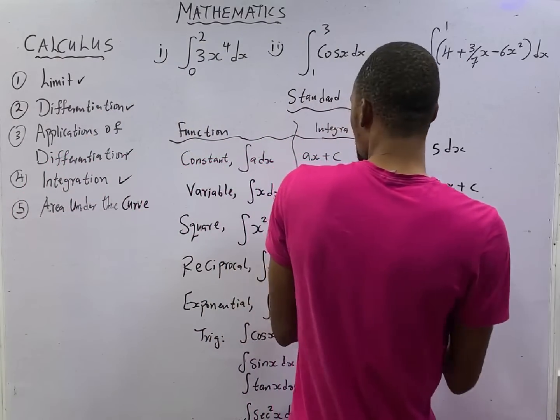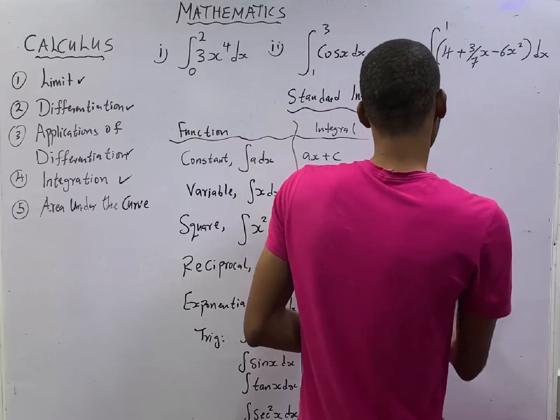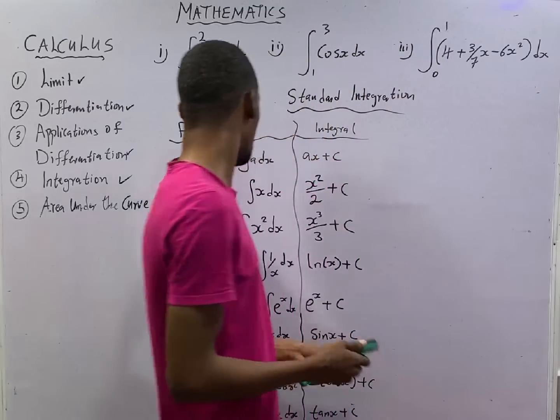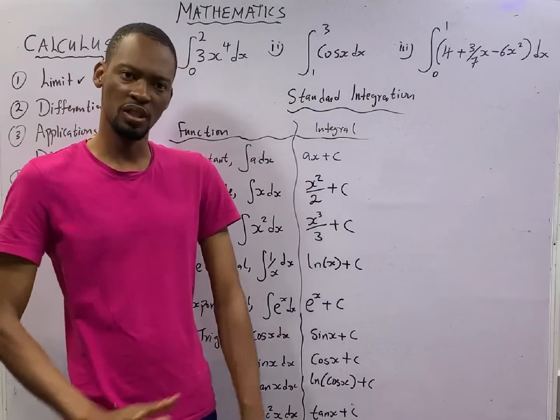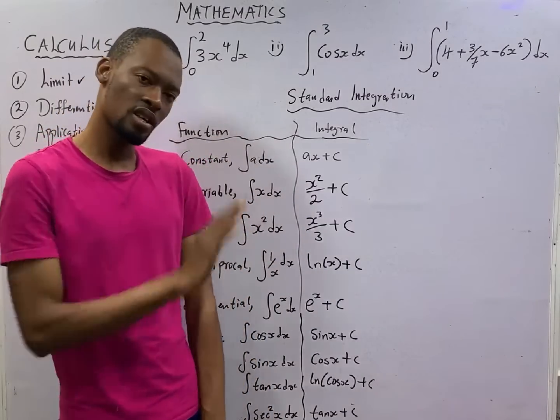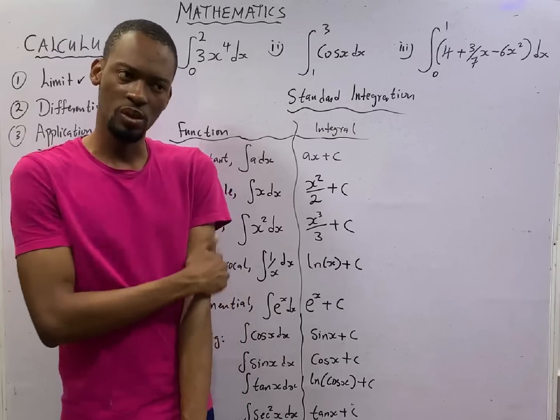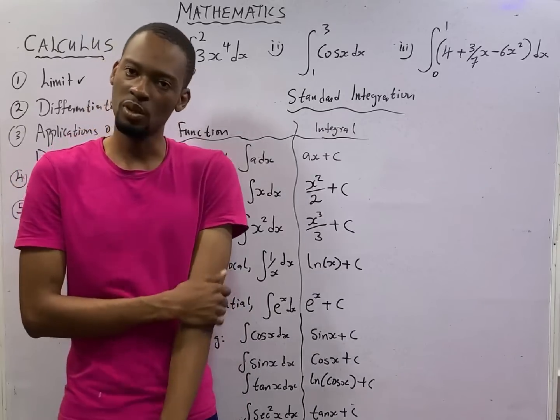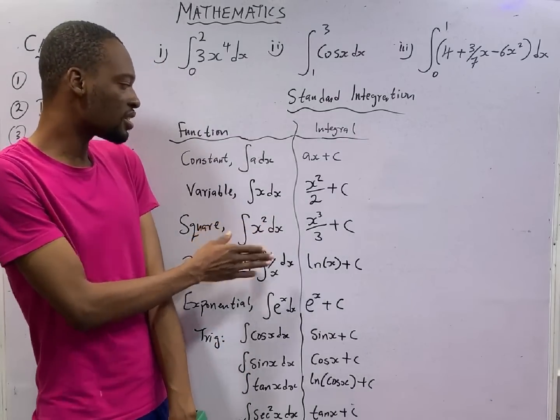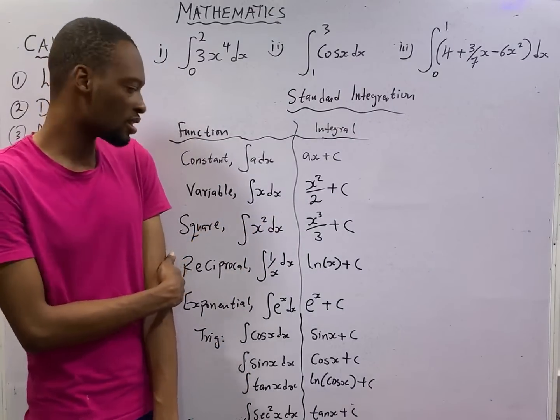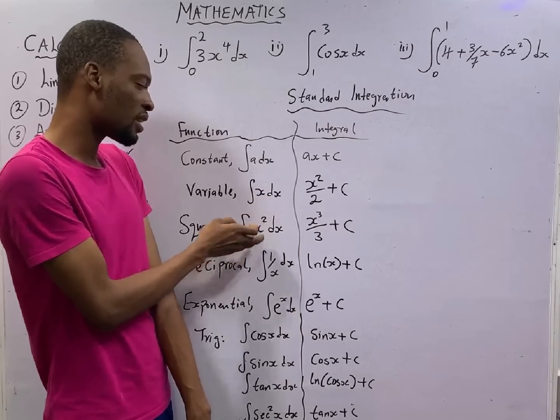Now, to integrate a variable, for example, if I say integrate s, it is simply s squared over 2. Integrate s, it is s squared over 2. Add 1 to the power, 1 plus 1, 2, divided by the power. If I say integrate s squared, it is s cubed over 3 plus c. You add 1 to the power, divided by the power.